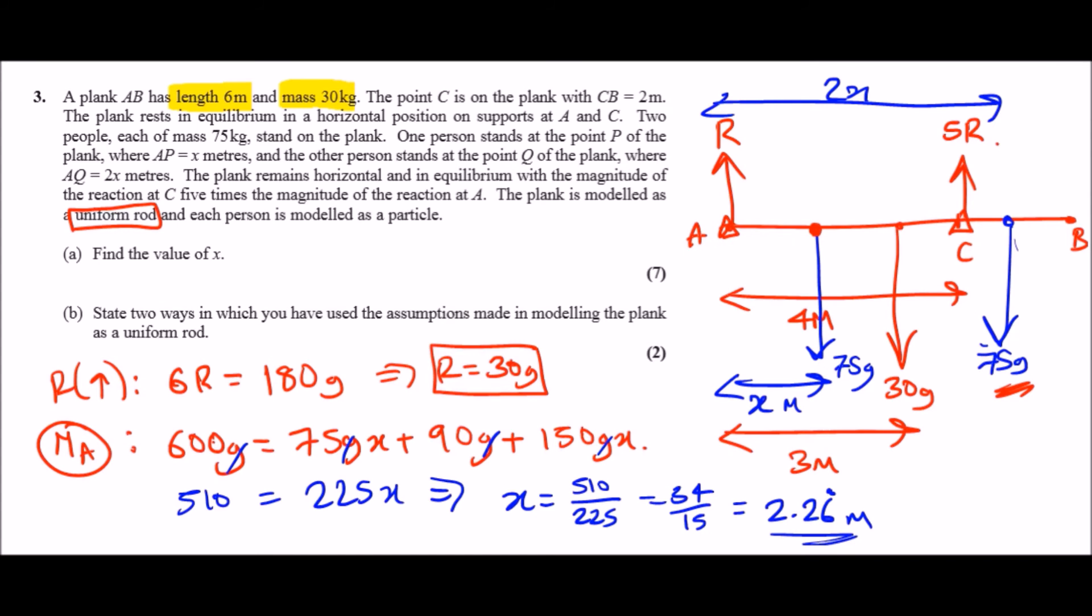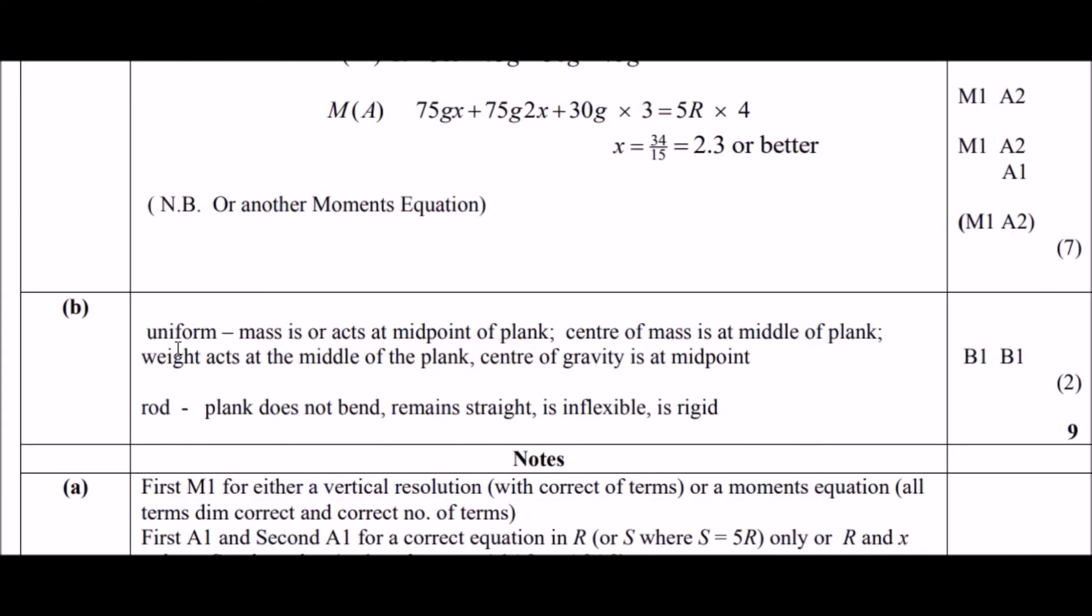Okay now this one's a typical state that question. So let's have a look at this wordy problem. State two ways in which you have used the assumptions made in modeling the plank as a uniform rod. Two words: uniform and rod. So as a rod we can say that this rod is straight, as you can see, or not my one's kind of bendy but usually you gotta say that the rod does not bend, it's straight, it's rigid. So that's one of the major things. The second thing is the fact that it's uniform. This implies that the midpoint is actually in the center, so this is quite clear.